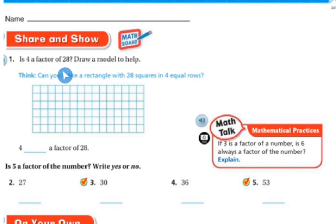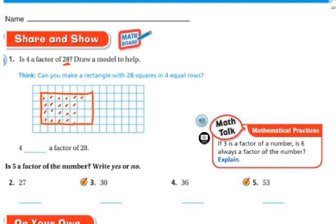Is 4 a factor of 28? Draw a model to help. We're looking for 4 groups, so go down 1, 2, 3, 4, with 28 in the box. Then count across: 1 through 7. You could count all the squares up to 28 to confirm. Since it goes in evenly with no gaps, 4 is a factor of 28.